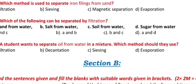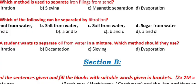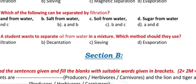Question 13: Which method is used to separate iron filings from sand? a) Filtration, b) Sieving, c) Magnetic separation, d) Evaporation.